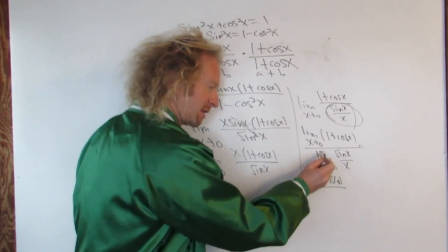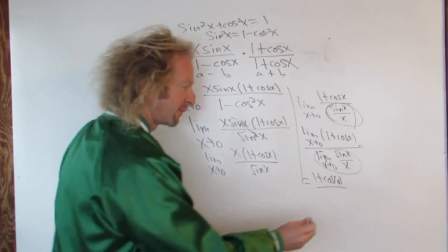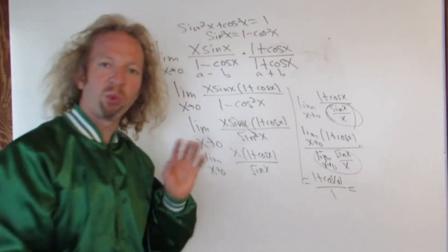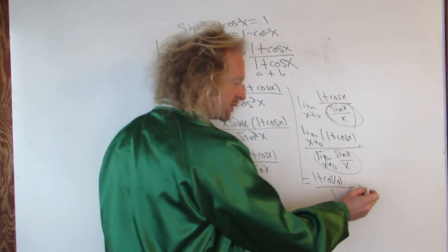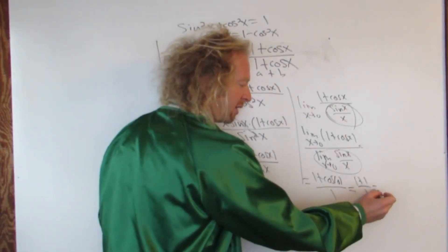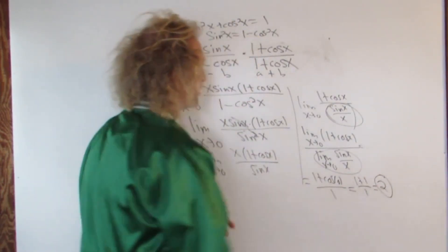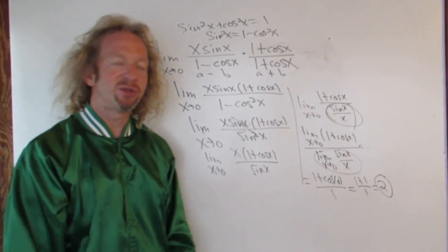And then this limit here, this is a special limit. It's equal to one. Cosine zero is one, so you get one plus one. So you just get one plus one over one. So you get two over one. So the answer is two. So the answer to this problem is two. Kind of a cool problem.